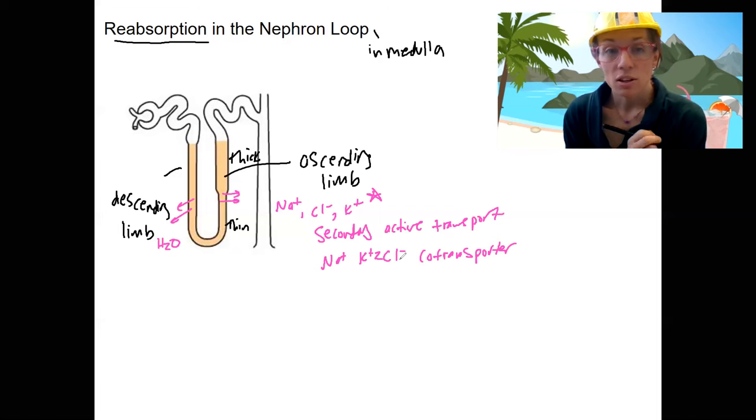So the two things to consider when looking at what moves where are: is there a gradient for that thing to move? If not, we need to have ATP action.